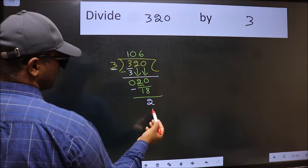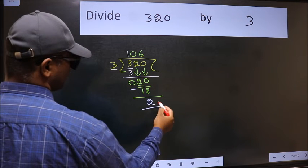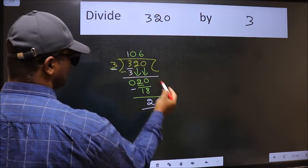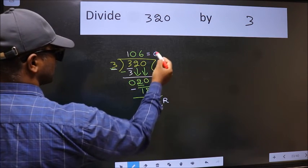No more numbers to bring it down. So, this is where we stop. This is our remainder and this is our quotient.